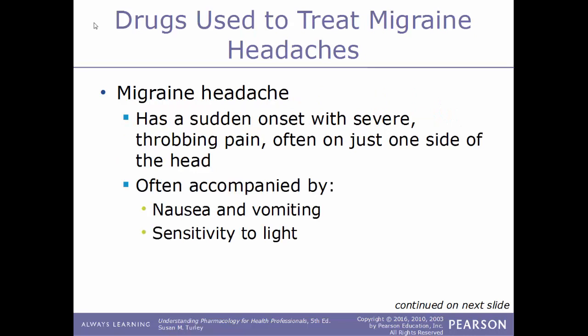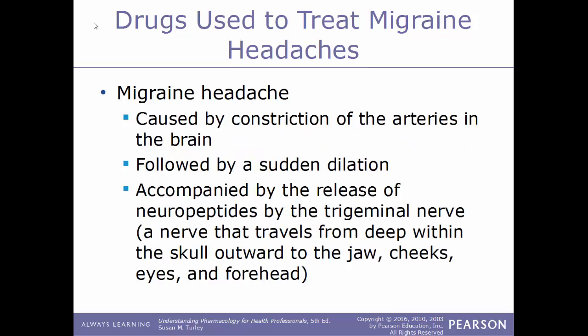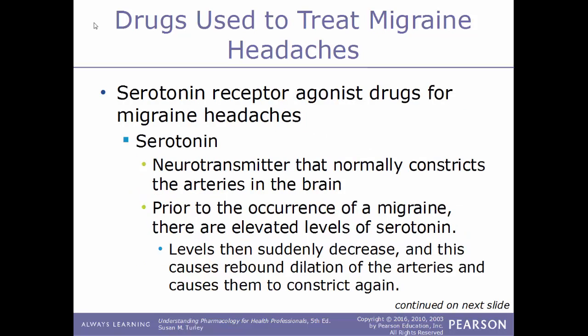Now we'll move on to drugs used to treat migraine headaches. A migraine headache has a sudden onset with severe throbbing pain, often on just one side of the head. It is often accompanied by nausea, vomiting, and strong sensitivity to light. Migraines are caused by constriction in the arteries within the brain, often followed by sudden dilation, accompanied by the release of neuropeptides by the trigeminal nerve — which has branches that protrude into the jaw, cheeks, eyes, and forehead.